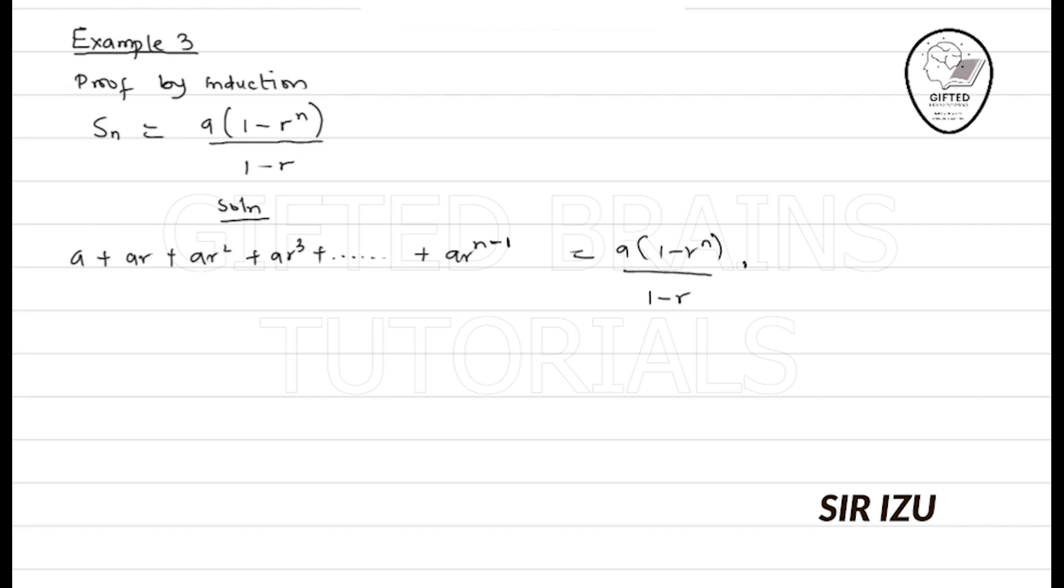So the first thing to do is to say let's let n be equal to 1, obviously. If n is equal to 1, we have just A. Just A on this left-hand side.